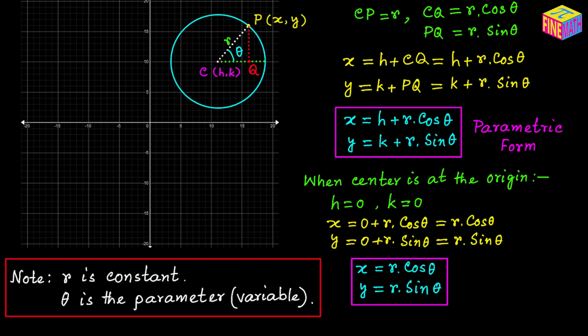But in this case, because we are talking about a circle, R is the constant and theta is the variable. So theta is also called the parameter, and because in these equations we have a parameter, it is called the parametric form of equation.